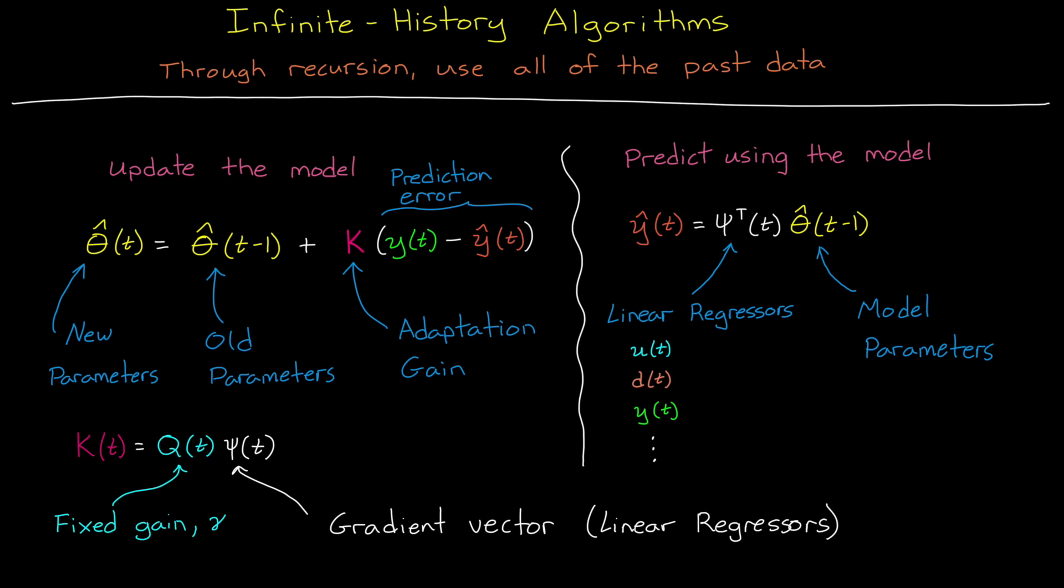Over time, the parameters will converge on the solution, since it's descending the gradient, assuming the gain isn't so large as to cause an instability, and not too small as to not be able to keep up with the time varying parameters.